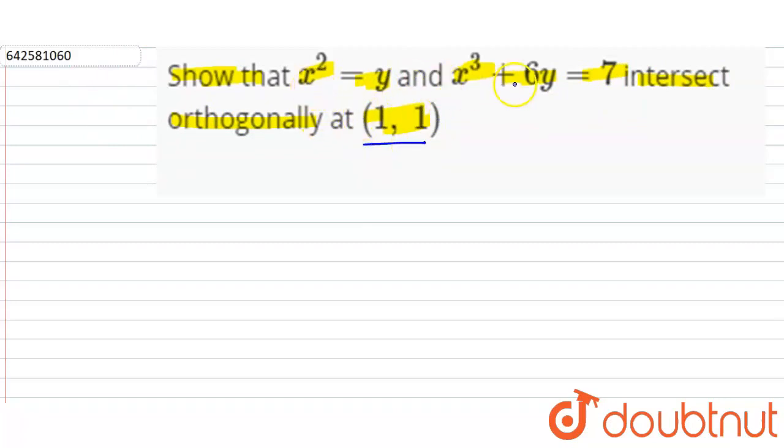We have to find the angle between these curves. The angle between any curves is the angle between their tangents. The slope of a tangent is dy by dx. So we have to find dy by dx for this curve at this point, and for this curve dy by dx at this point. If the product of their slopes is minus 1, then both curves intersect orthogonally.